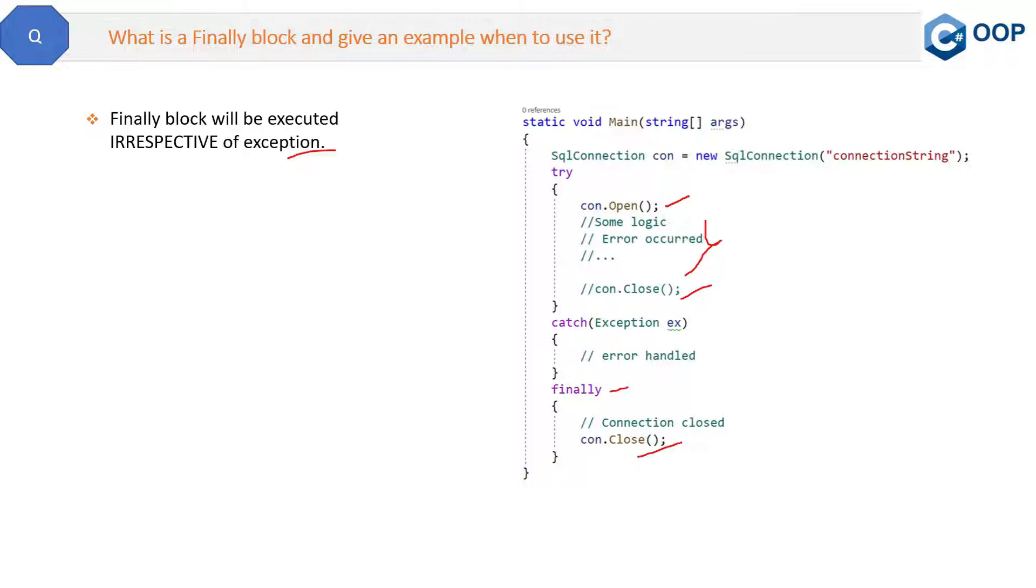So even though if there is any error will occur, but this finally block will definitely execute. And even if there is no error, even then it will execute. So it will make sure that your connection will be closed whether any exception will occur or not.